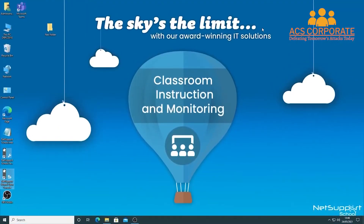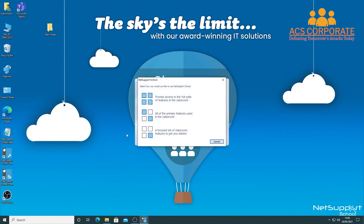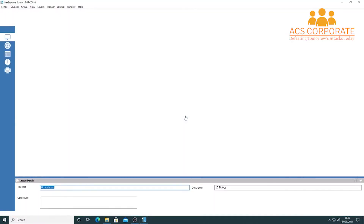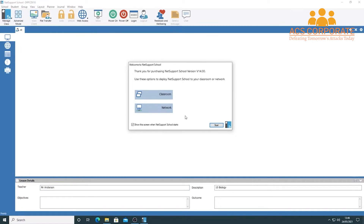Now that we've looked at easy mode, let's dive into intermediate mode and see what features and functionalities it offers. We go to the NetSupport School tutor console and again choose from three options — easy, intermediate, or advanced. This time we select intermediate, described as 'all the primary features used in the classroom.'